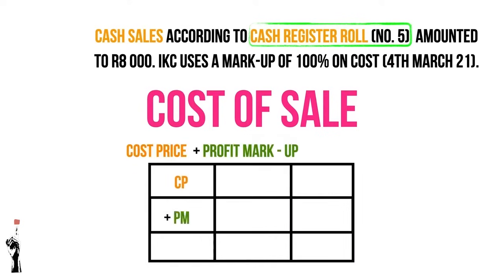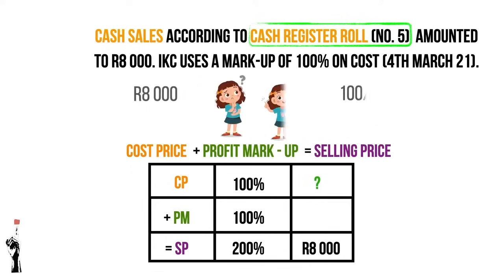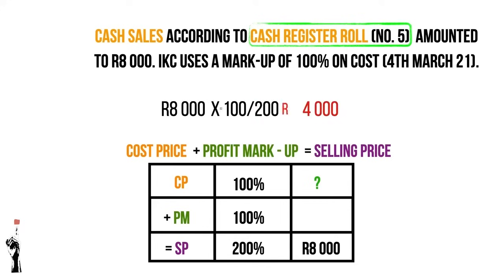Remember: cost price plus profit equals selling price. Cost price is always 100%. In this example, the profit markup is also 100%, making the selling price percentage 200%. The cost price is unknown and the selling price is 8,000 Rand. The formula is: unknown divided by known — 8,000 Rand times 100 divided by 200 — which equals 4,000 Rand. Therefore, the cost price is 4,000 Rand.